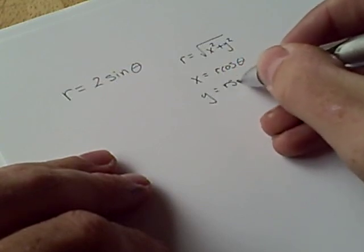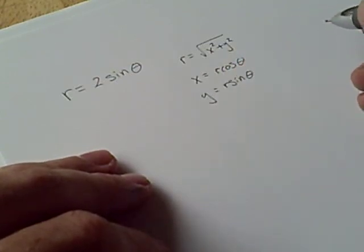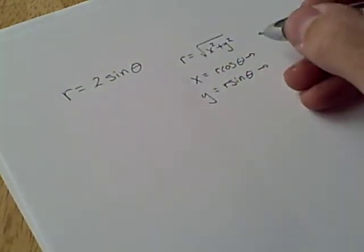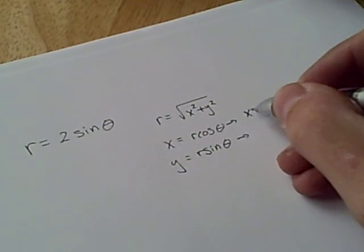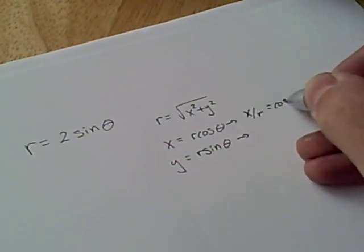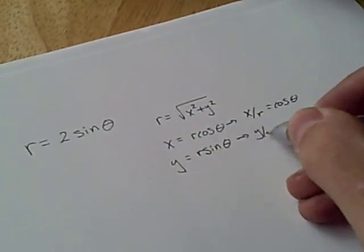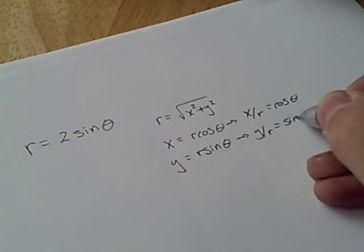So these are some of the things you might have seen in the text. What we tend to do, actually, is to use slightly different forms of these. Rather, x over r equals cosine of theta, and y over r equals sine of theta.